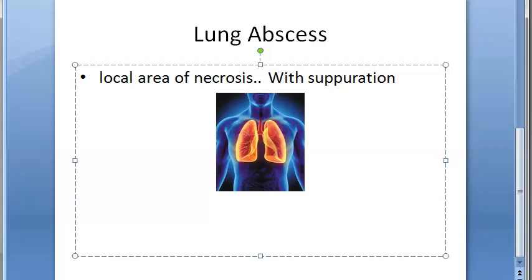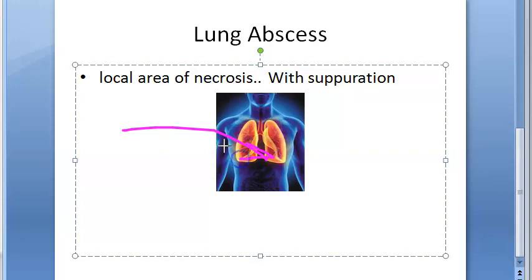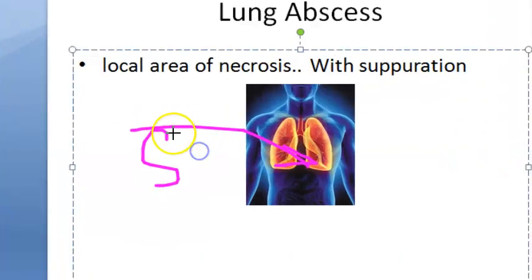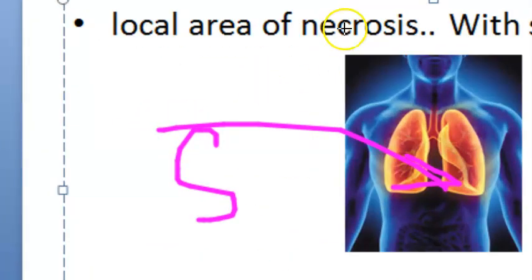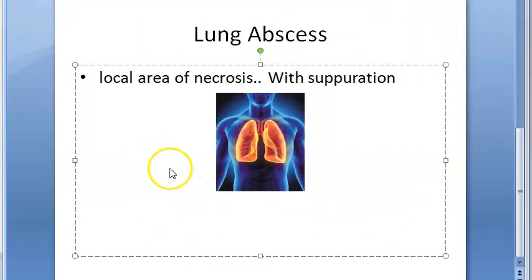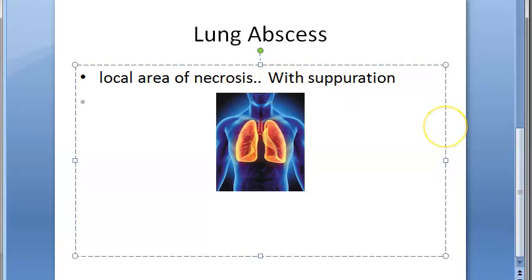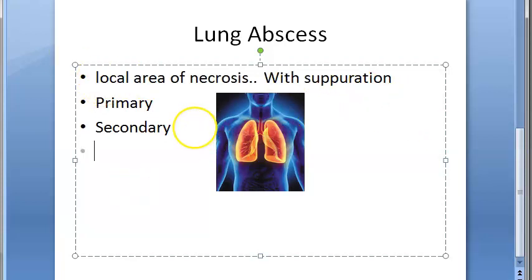There are two types of lung abscess. Primary lung abscess develops in a normal lung. Secondary lung abscess occurs as a complication of some other disease — that infection travels to the lung and affects it. So primary affects the lung directly; secondary is where a disease elsewhere in the body comes and affects the lung.